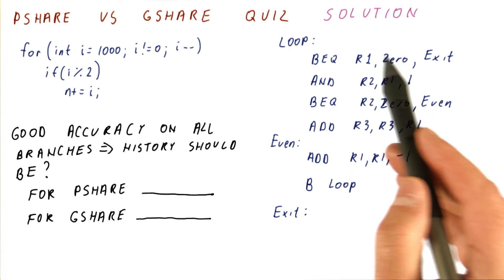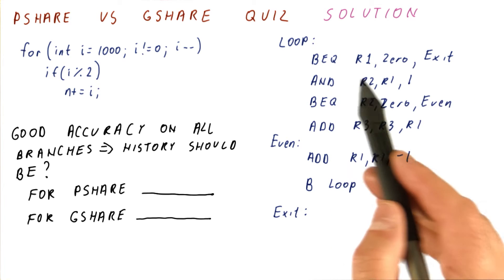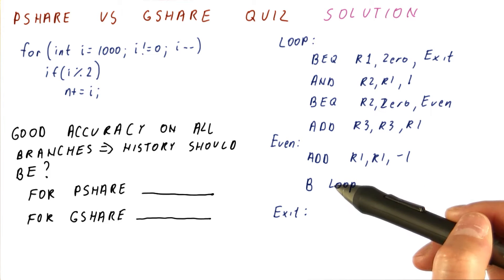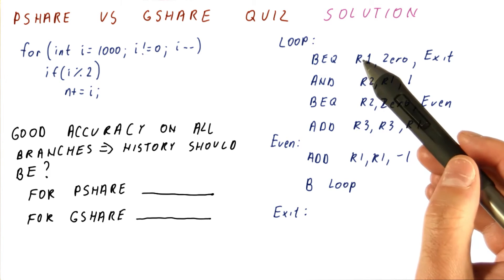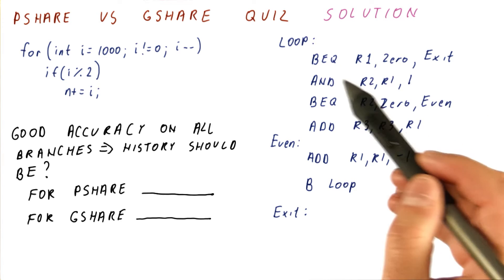The exit branch, we do a thousand iterations. Each time it's not taken, except the last time. So for this branch, again, we don't need much history.